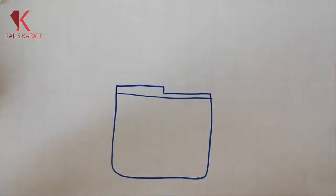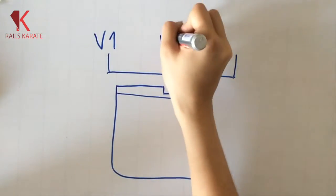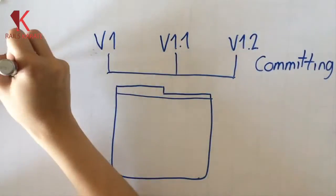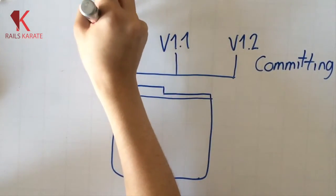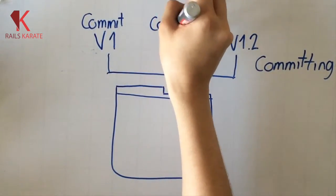A VCS does not automatically keep track of the version of your project. You have to explicitly tell them when a version is finished. The act of telling your VCS that a version is finished is called committing. Then you commit changes into your repository. Because of these, versions are often referred as commits.